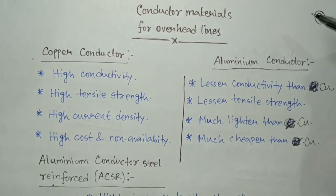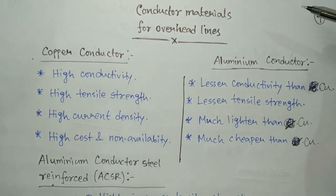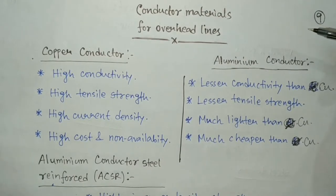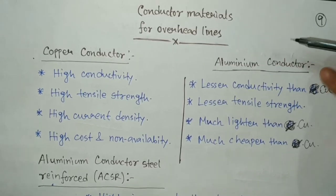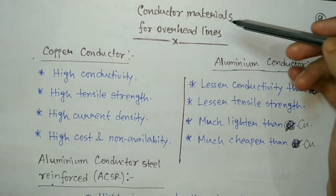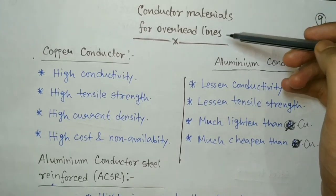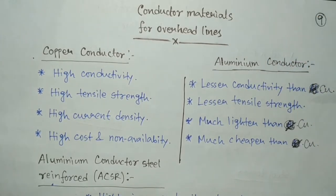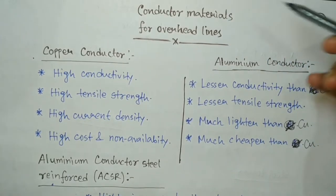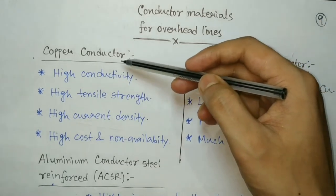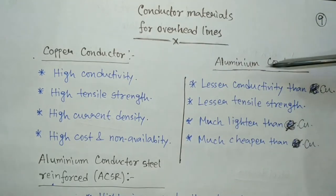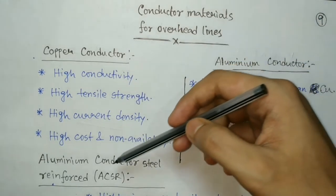Hello everyone, welcome to my channel Electrical Concepts. My name is Avik Roy. Today I am going to discuss the topic of conductor materials for overhead lines. There are different conductors available, like copper conductor, aluminium conductor, and ACSR or aluminium conductor steel reinforced.